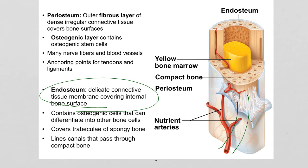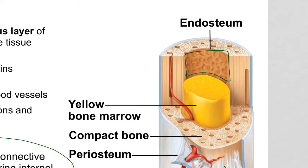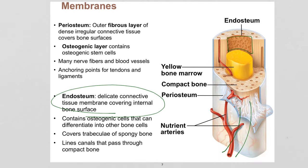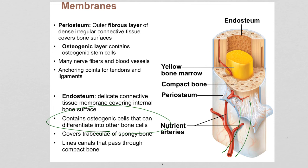The endosteum is much thinner — it's microscopic. It lines the entire interior surface of a bone, covering the trabeculae of spongy bone and the medullary cavity in a long bone. It doesn't serve as an attachment site, but it does contain those same osteogenic cells that can remodel bone tissue from the inside. During childhood growth, cells in the endosteum differentiate into osteoclasts to break down tissue and enlarge the medullary cavity, while stem cells in the periosteum become osteoblasts to build more tissue and widen the bone.